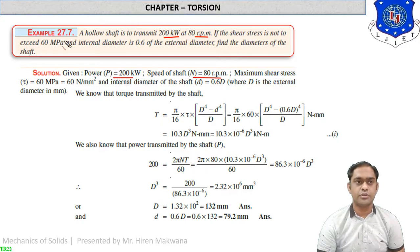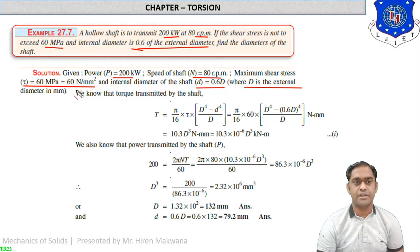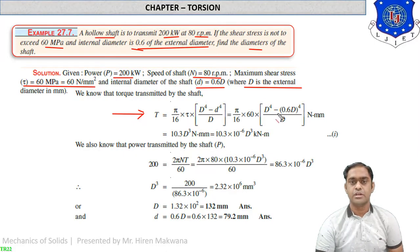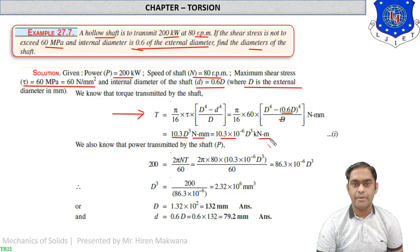Shear stress τ = 60 MPa. The internal diameter is 0.6 times the external diameter, i.e., d = 0.6D. We have to find both diameters. Apply the hollow shaft torque formula: T = (π/16) × τ × (D⁴ − d⁴) / D. Substituting d = 0.6D, d cancels with the denominator D, giving T in terms of D³ as approximately 10.3 × D³ × 10⁻⁶ N·mm (i.e., in kN·m).